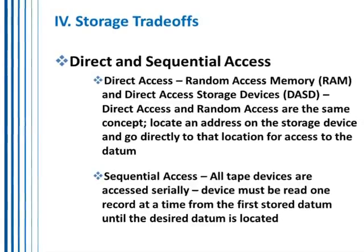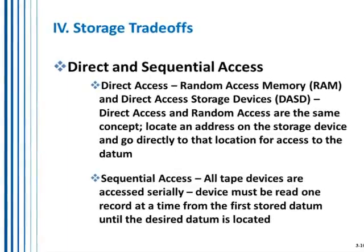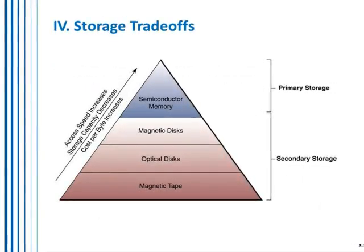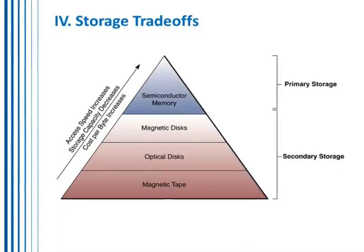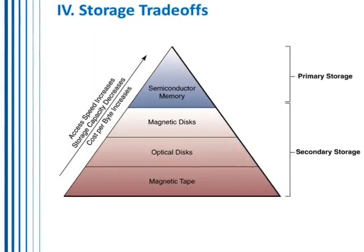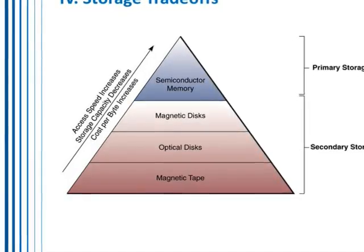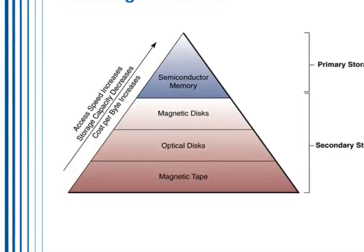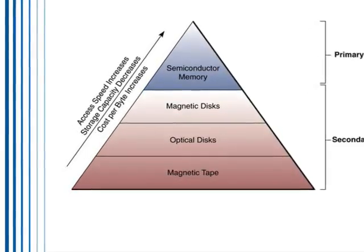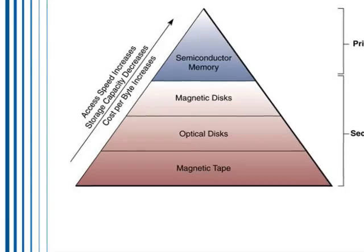We don't use sequential access much anymore. Tape-access devices are only used for archiving purposes today, where speed is not important. There are trade-offs between storage speed and type. Primary disk storage has a higher price in semiconductor memory, which is faster than a physical hard disk or magnetic disk. Optical disks like CDs or DVDs still operate very slowly in a computer world, and at the bottom of the triangle is magnetic tape — the slowest form of all.